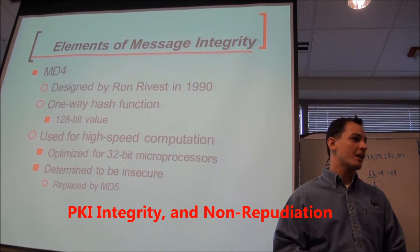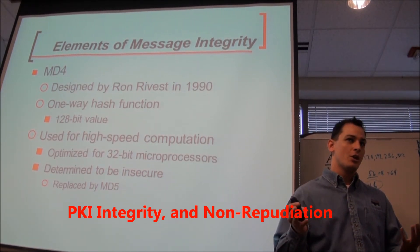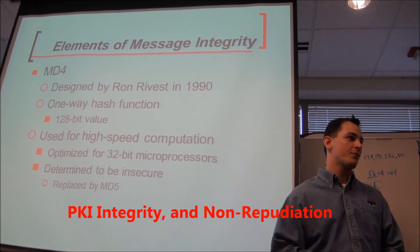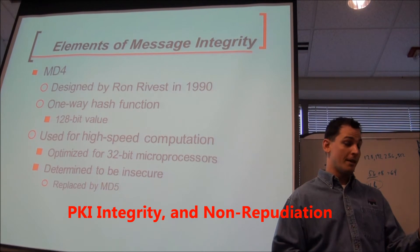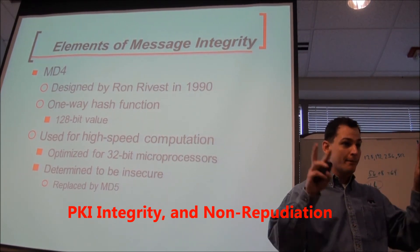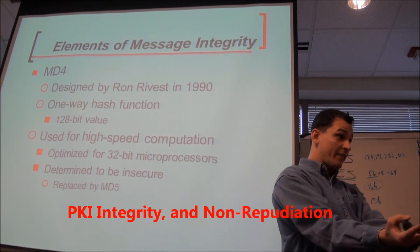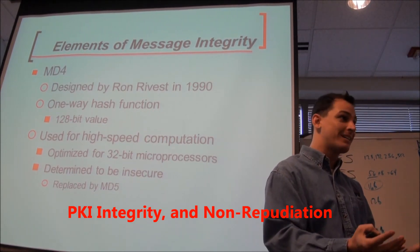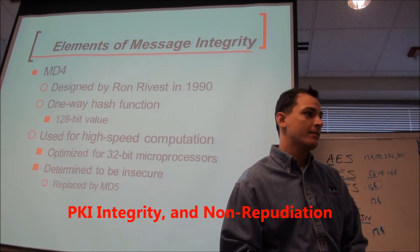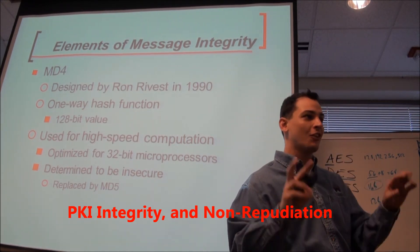If it were confidentiality, insecure would mean your key sizes can be figured out, you can brute force it, or the key gets disclosed. So you have different sets of insecurities for integrity than for confidentiality. In some very important cases — like court cases — it has to be beyond a reasonable doubt. If I can show two pieces of evidence where one could be the other, that could throw the evidence out in court. That's why you want to use something like SHA, which is more secure.